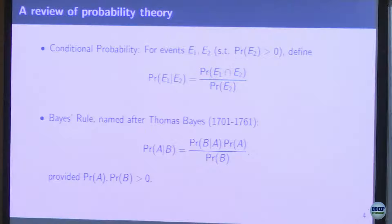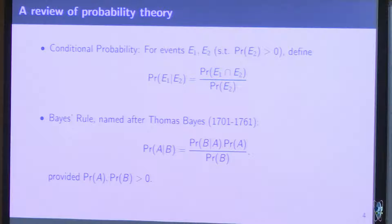Conditional probability: given an event has already occurred, how will it affect the probability of another event? For example, rolling a die — given that I tell you an even number has occurred, the probability of getting 2 would be 1/3. This is basically what conditional probability does.